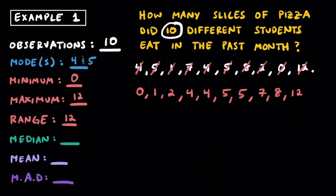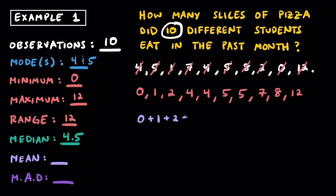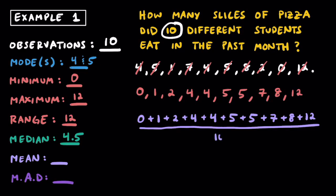To find the median, we're going to find the middle number. We can cross off the 0 and 12, then 1 and 8, 2 and 7, 4 and 5, and we're left with two middle numbers since we have an even number of observations. Exactly between 4 and 5 is 4.5. You can add those two middle numbers together and divide by 2 — we get 9 over 2, or 4.5. To calculate the mean, we add up each of our observations and divide by 10. Adding up all the slices of pizza, we get 48 divided by 10, so on average each student ate 4.8 slices in the past month.